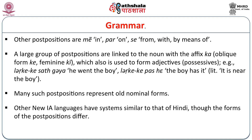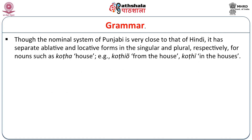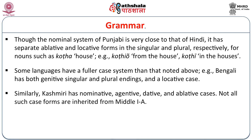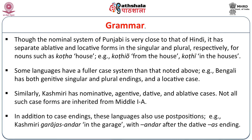Other New Indo-Aryan languages have systems similar to that of Hindi, though the forms of the postpositions differ. Punjabi's nominal system is very close to that of Hindi, but has separate oblique and locative forms in the singular and plural respectively. Some languages have a fuller case system — Bengali has both genitive singular and plural endings and a locative case. Similarly, Kashmiri has nominative, agentive, dative, and ablative cases. Not all such case forms are inherited from Middle Indo-Aryan. In addition to case endings, these languages also use postpositions, and having postpositions is a feature of most Indian languages.